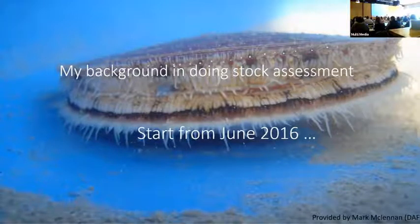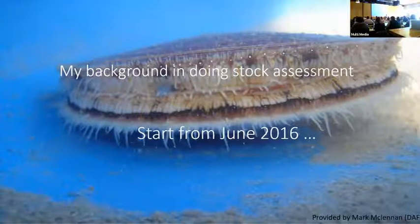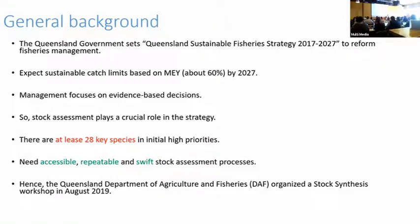There was a continuous project from FRDC, and we reviewed the stock model for scallop. The Queensland government set up a sustainable fishery strategy from 2016–2017, expecting that by 2027 the catch rate would be based on 60% of the biomass. All measures should be based on results, so stock assessments became very important in this strategy.